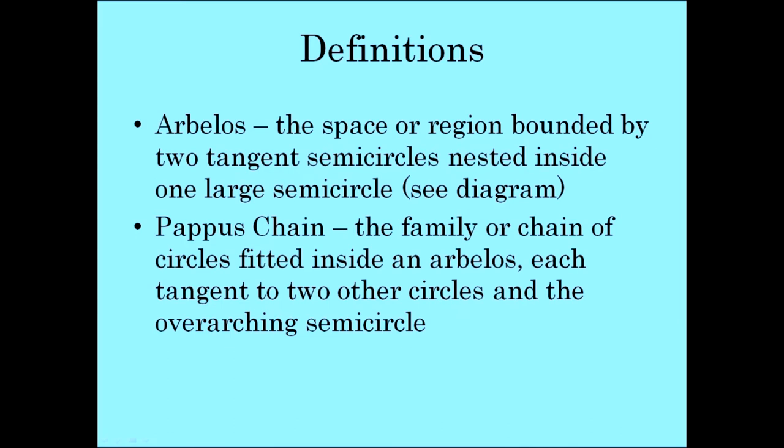For one starting definition, we will consider the arbelos, which is the space or region that is bounded by two tangent semicircles nested inside one large semicircle. A Pappus chain is the family or chain of circles that are fitted inside this arbelos, each one tangent to the two circles and the overarching semicircle. So we'll see what that really means right here.